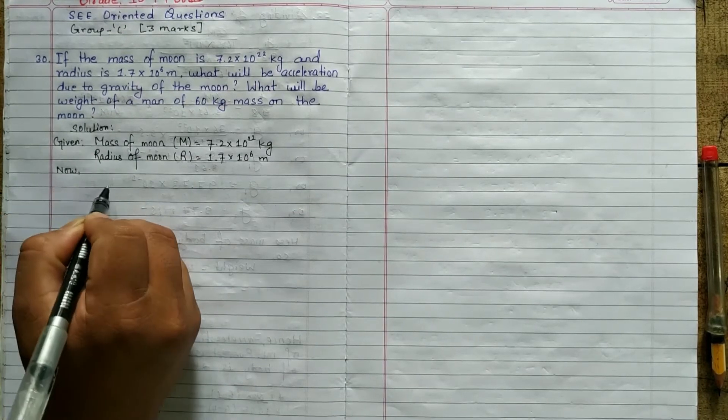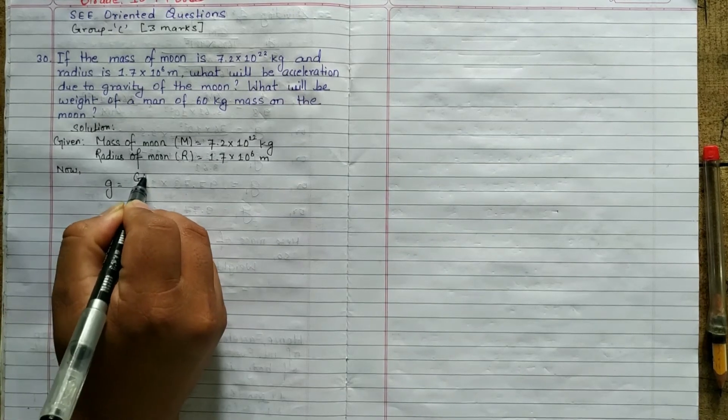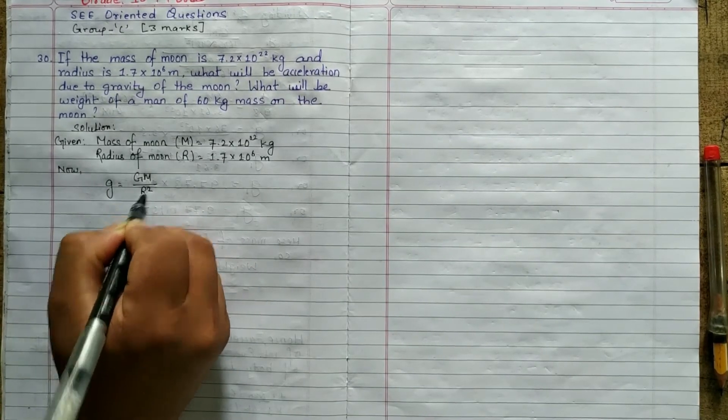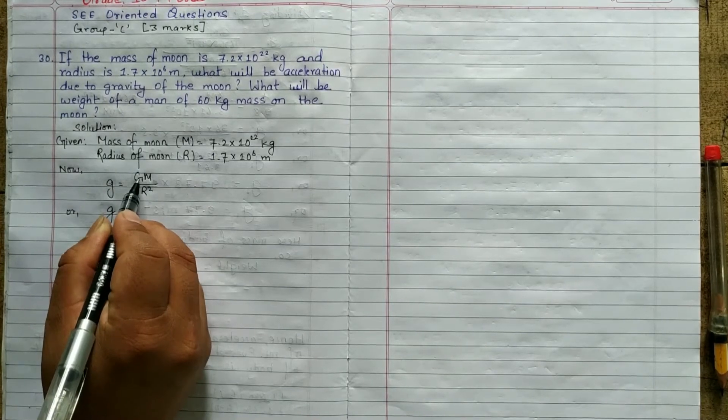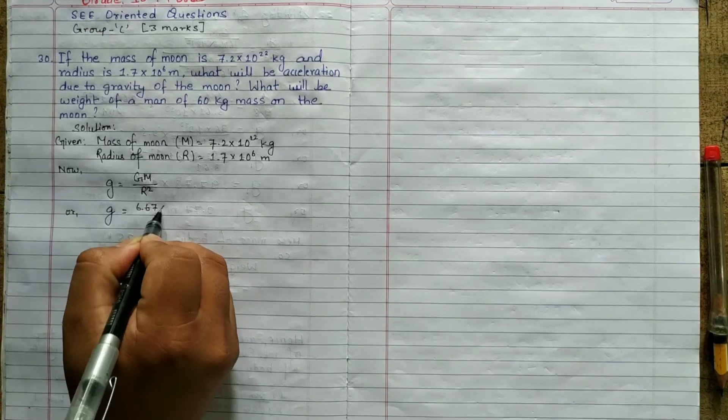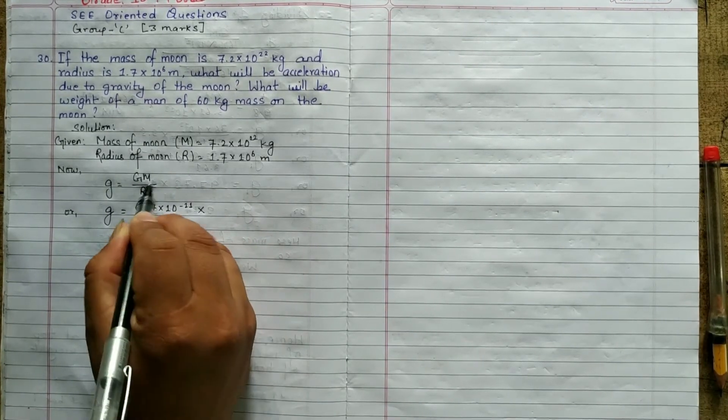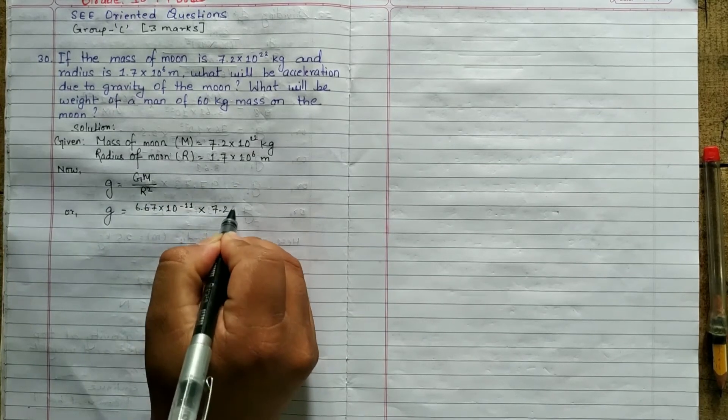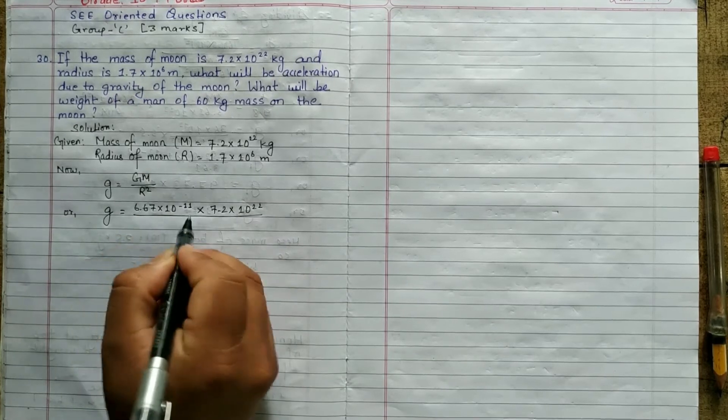Now, solution: gravity formula is g equals to GM by R square. Or, g equals to, G is universal gravitational constant. Its value is 6.67 × 10^-11, always into M, our value 7.2 × 10^22 kg divided by R squared, 1.7 × 10^6 meter whole square.